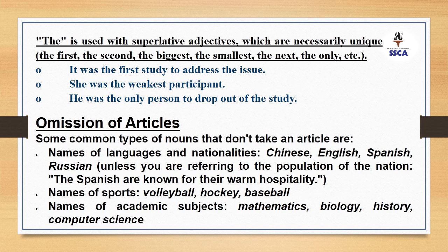It is very important to know where and when not to use any articles. Some common types of nouns that don't take an article are: names of languages and nationalities — Chinese, English, Spanish, Russian — you don't use 'the', unless you are referring to the population of the nation, like 'The Spanish are known for their warm hospitality.' Names of sports — volleyball, hockey, baseball — no article is used. Names of academic subjects — mathematics, biology, history, computer science — no article is used.